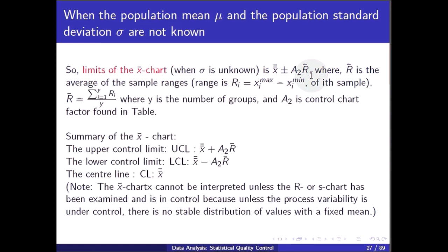The control limits of the X-bar chart when sigma is unknown are: x-double-bar ± A2 * R-bar, where R-bar is the average of the sample ranges. The range ri = xi_max - xi_min of the i-th sample, and R-bar = (sum of ri from i=1 to y) / y, where y is the number of groups and A2 is the control chart factor from the table. Summary: UCL = x-double-bar + A2 * R-bar, LCL = x-double-bar - A2 * R-bar, and center line = x-double-bar.